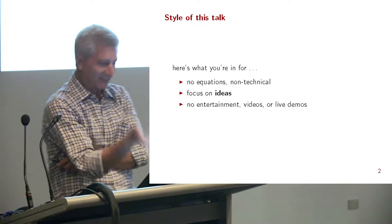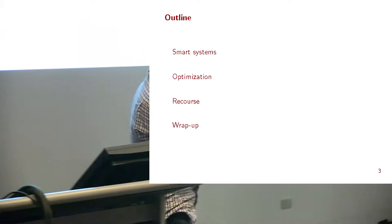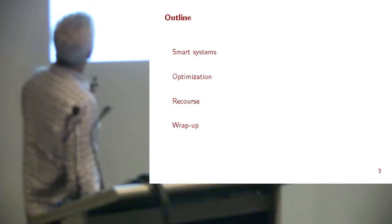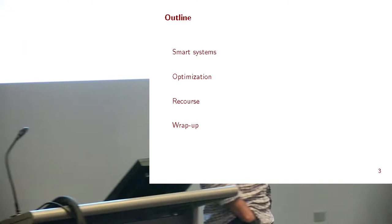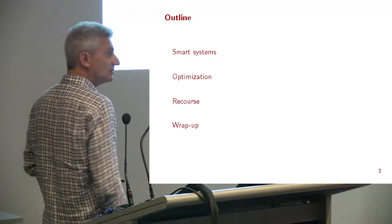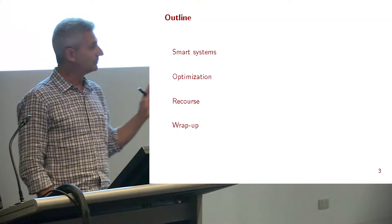Here's the plan. First I'll give you a rough idea of what I mean by a smarter system. Then I'll say a little bit about the mathematical field that underpins them — that's optimization. When you're in the general public, you actually have to specify 'mathematical optimization' because optimization means something else. I'll then talk about the idea of recourse — simply doing something different when you find new information. Then I'll wrap up.